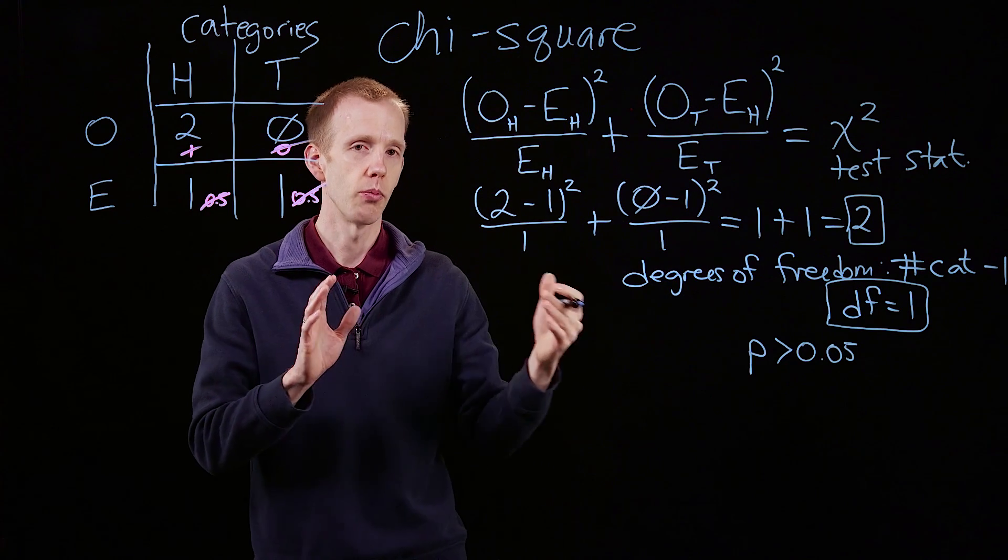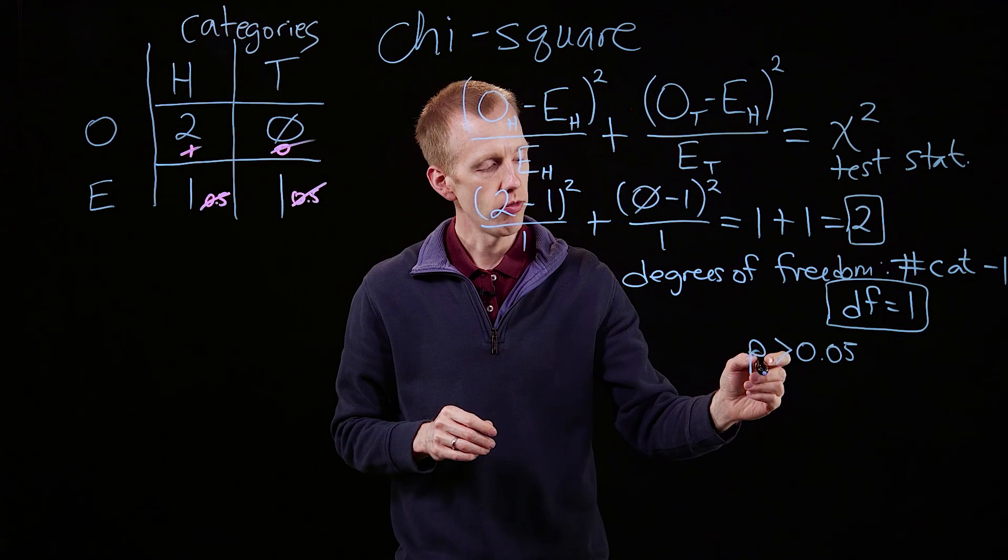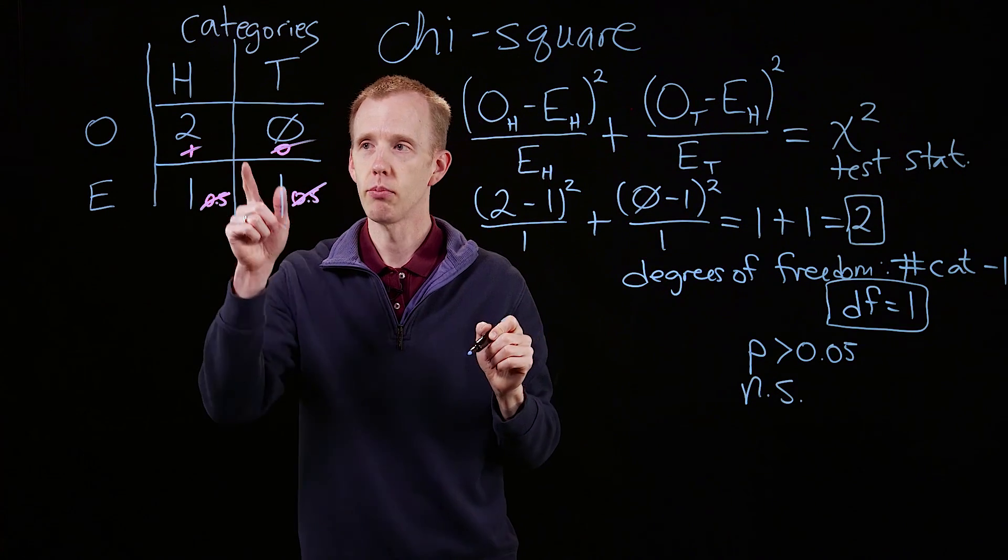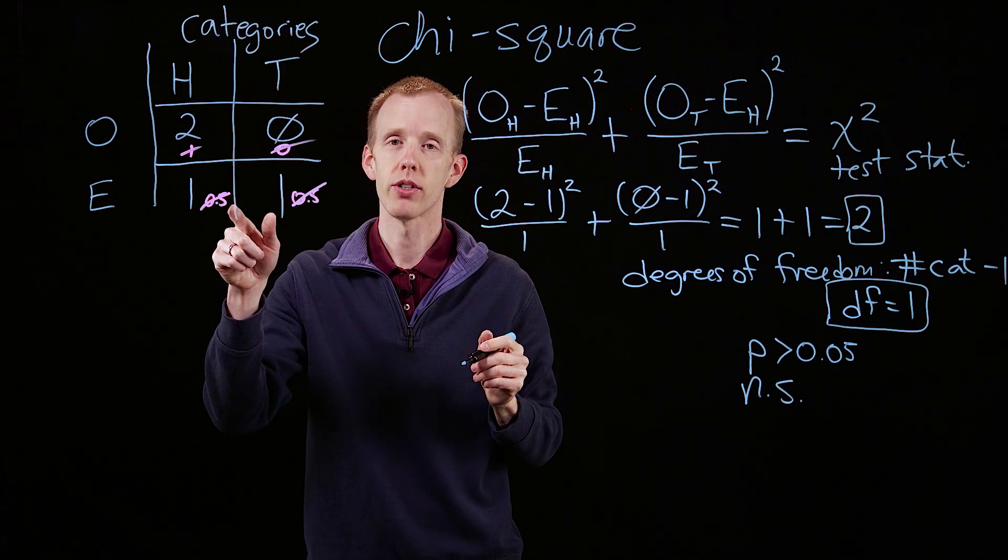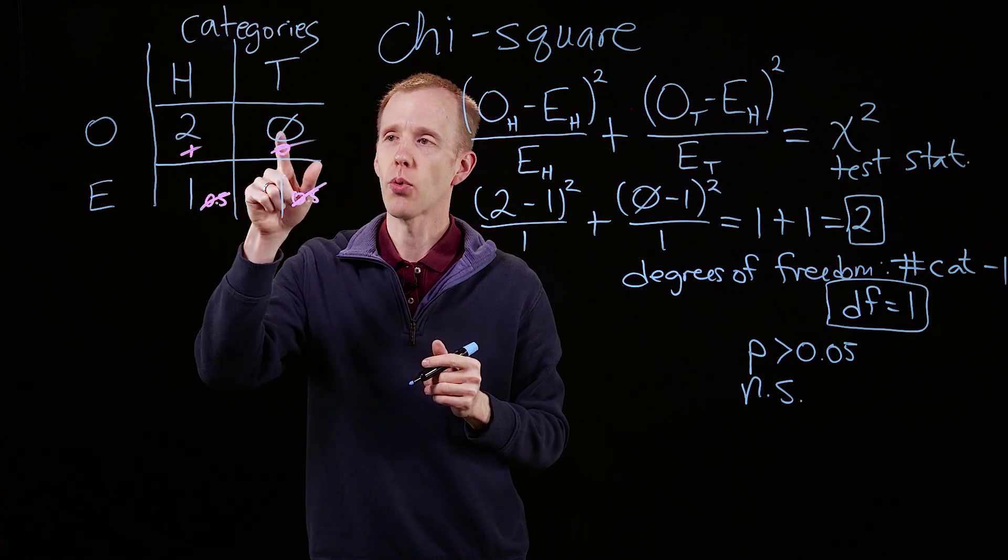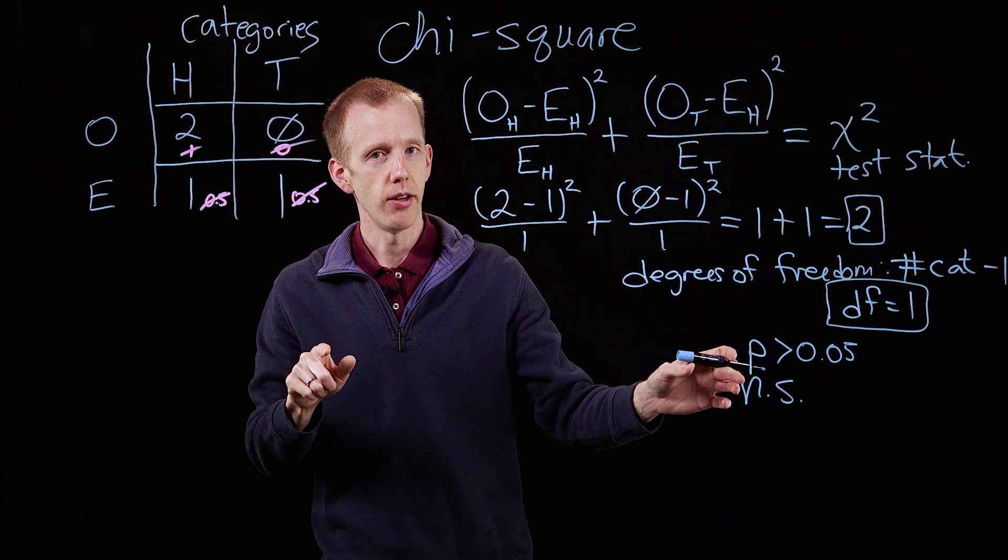Where p ranges from 0 to 1. And a p-value greater than 0.05 means there's no significant difference between these two numbers. In other words, it's not important that we saw heads twice and tails zero times and expected one to one. No significant difference.